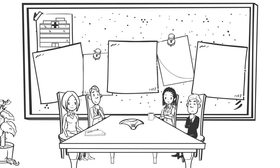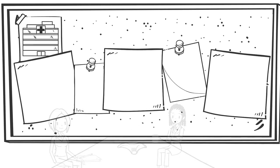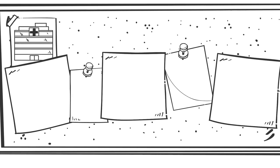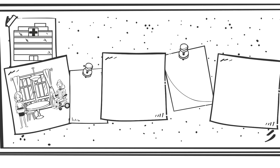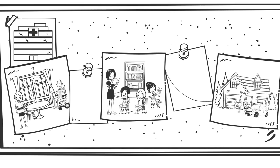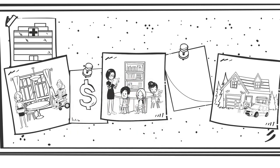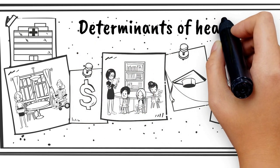However, access to health care is one of the many factors that determine health. Health care systems also need to consider things such as social supports, healthy child development, physical environments, income, and education. These factors are called determinants of health and play an important role in contributing to healthy populations.